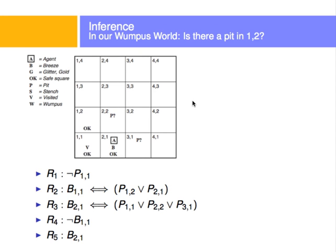Now let's look at our Wumpus world where we have the grid and our basic five rules. I want you to copy these rules down because we're going to use them later. What we want to do now is to find out: is there a pit in 1,2? We do not know — we're going to try and find it by logic.